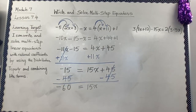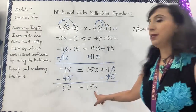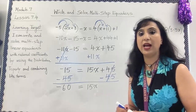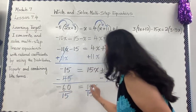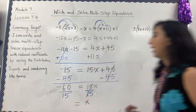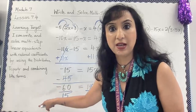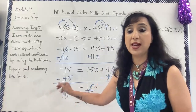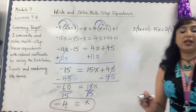This is now a one-step equation. Since 15 times x uses multiplication, the inverse is division. I'm going to use the division property of equality and divide both sides by 15. 15 divided by 15 gives 1, and 1 times x is x. Negative 60 divided by 15 — opposite signs — gives a negative quotient. 60 divided by 15 is 4, so x equals negative 4.